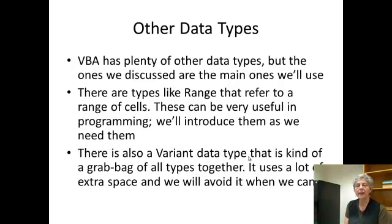Now there's plenty of other data types. And we'll work, for example, with a range type which refers to a range of cells, so it's not just basic data. There's other kinds of data that you can use too. We'll add those as we go along. And then there's also what's called a variant data type, which can be any data type. It's like a grab bag of any data type. The problem with variant is that there are actually some pretty huge data types, and when you use variant it has to use enough space for the biggest data type there is. So you want to avoid those as much as you can.